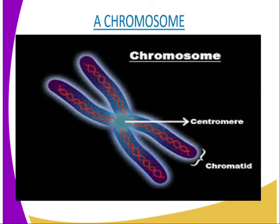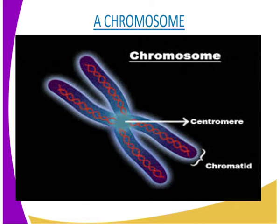Chromosomes are present in the nucleus all the time but they only appear or become visible when viewed under a microscope during cell division. In body cells, chromosomes occur in pairs. Each pair of chromosomes has a characteristic length, and a member of each pair is called a homologous chromosome.